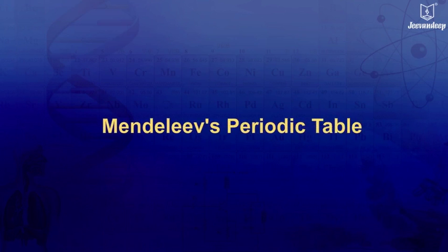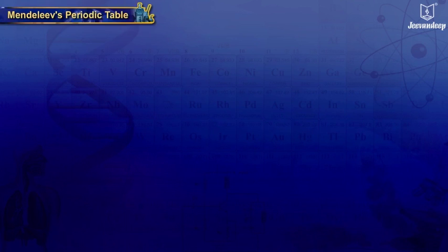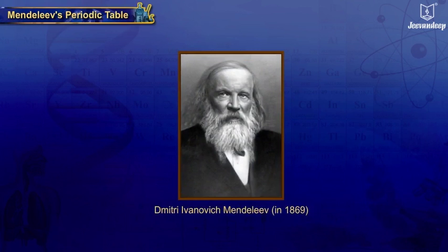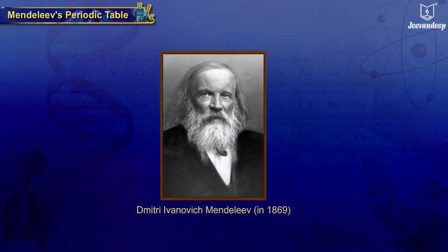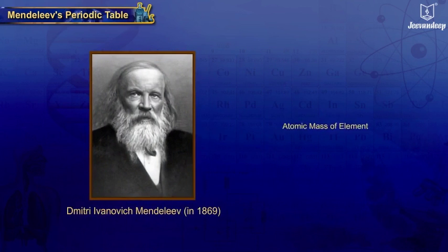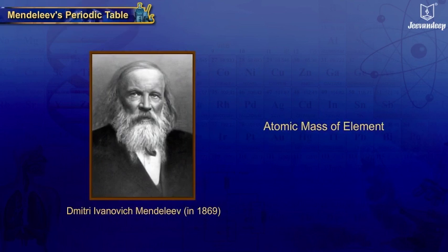Mendeleev's Periodic Table. According to Mendeleev, a Russian chemist, atomic mass of an element was the most fundamental property in classifying the elements.